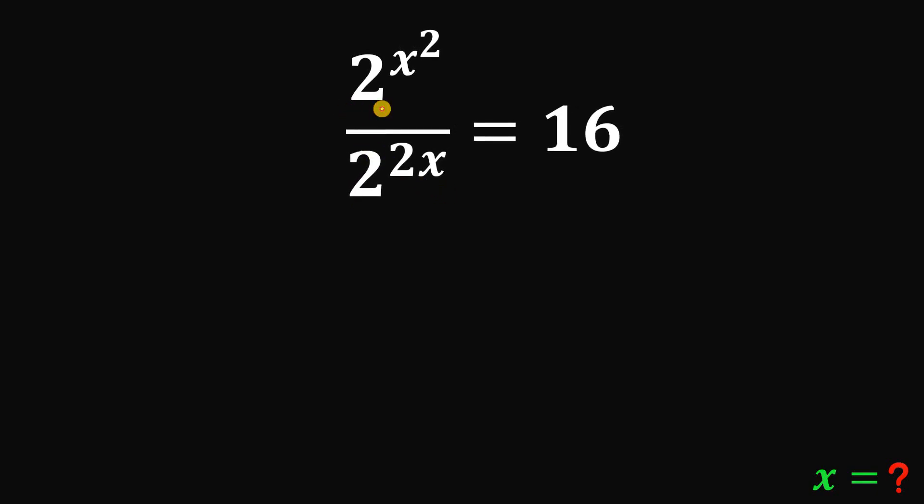Next, using sum laws of exponent, since we have the same base, what we're going to do is to subtract their exponent. So, we have 2 raised to the power of x squared minus 2x on the left hand side and bring down 16.